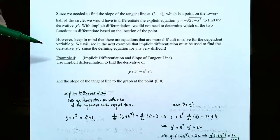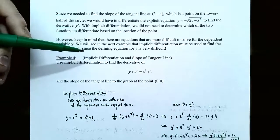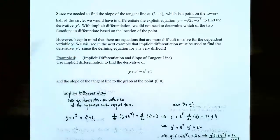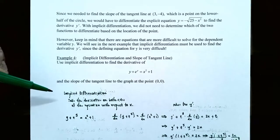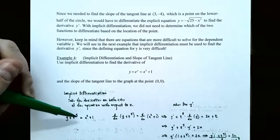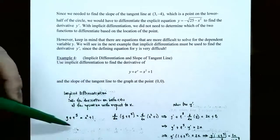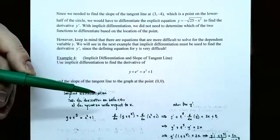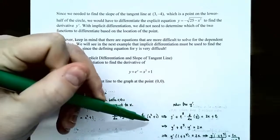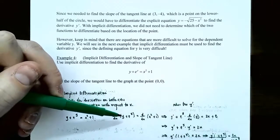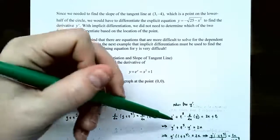Let's do an example where it may be impossible to solve for y. Example 4: implicit differentiation and slope of a tangent line. Use implicit differentiation to find the derivative of y plus e to the y power equals x squared plus 1, and then find the slope of the tangent line to the graph at (0, 0). Take the derivative on both sides of the equation with respect to x. Keep in mind that y is a function of x, so you have to use the chain rule on the left side. The derivative of y is 1 times y prime, giving y prime.